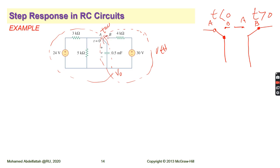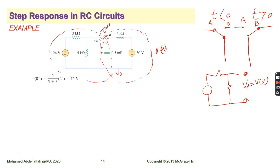Step by step — to find V0, consider the left circuit before time zero. We have a supply, and the capacitor acts as an open circuit under DC steady-state. We need to find the voltage across the capacitor, which equals the voltage across the 5-ohm resistor. We have a 24-volt supply with a 3-ohm and a 5-ohm resistor. Use the voltage divider rule directly to find V0 across the capacitor.